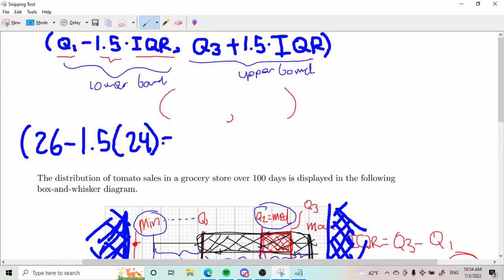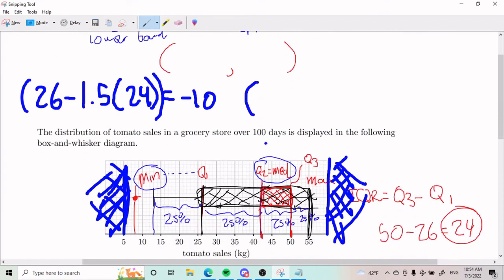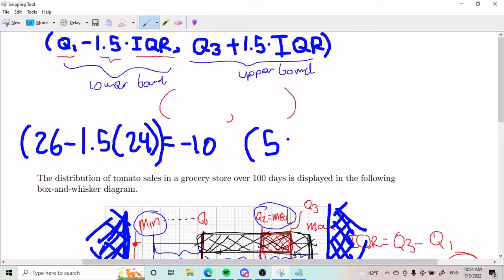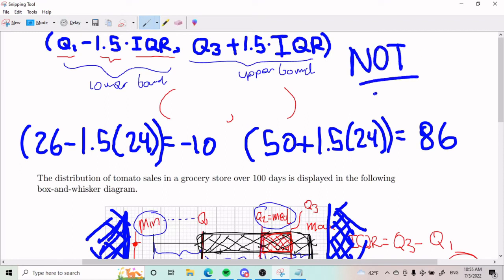The upper bound is going to be Q3, which we said was 50, plus 1.5 times IQR, which was 24. This gives me 86. This formula is not in your formula booklet, but it does get taught to you in class. So it's one of the few things that you just have to remember. You literally memorize it.